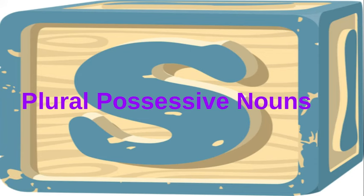Plural possessive nouns. Plural means more than one. A noun is a person, place, or thing, and possessive means something belongs to something else.